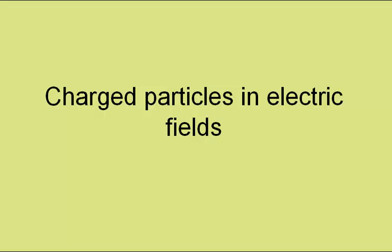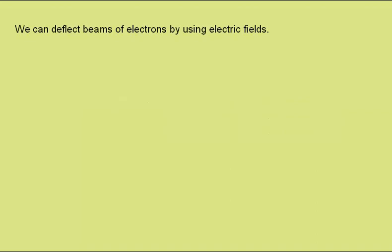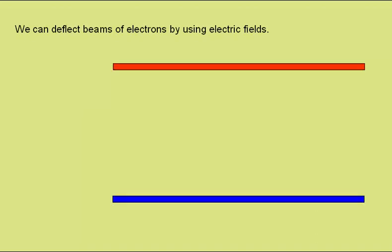Charged particles in electric fields. We can deflect beams of electrons by using electric fields. Here we have two metal plates a distance d apart, with a potential difference V across them.